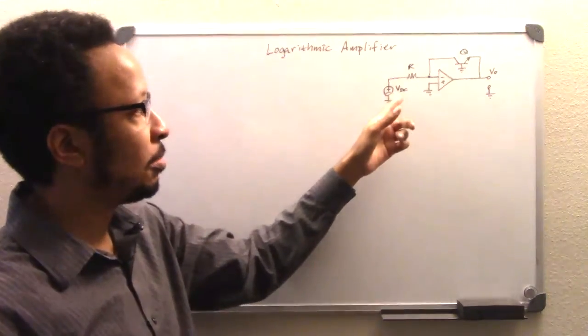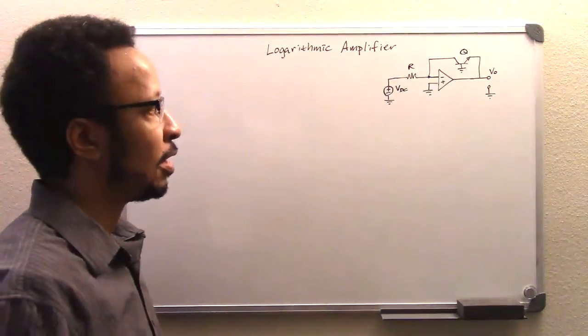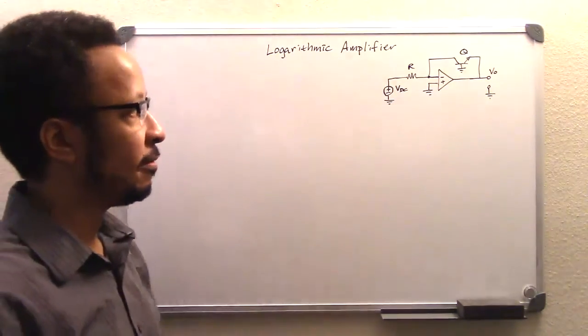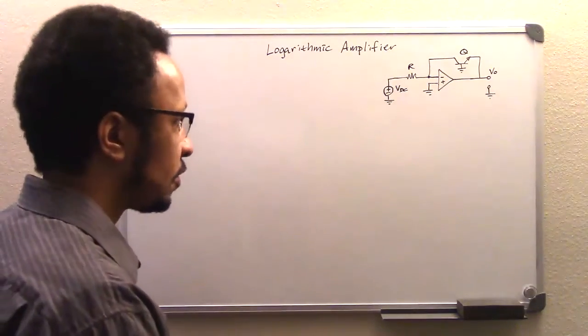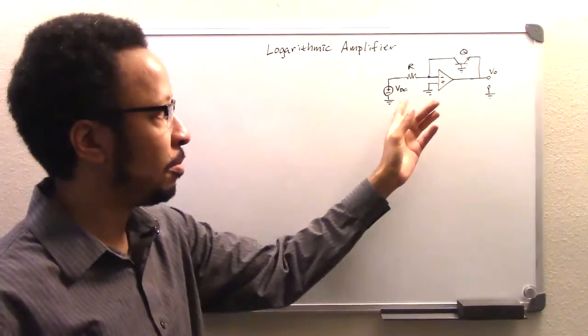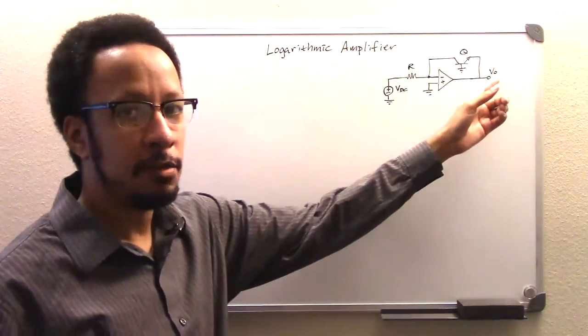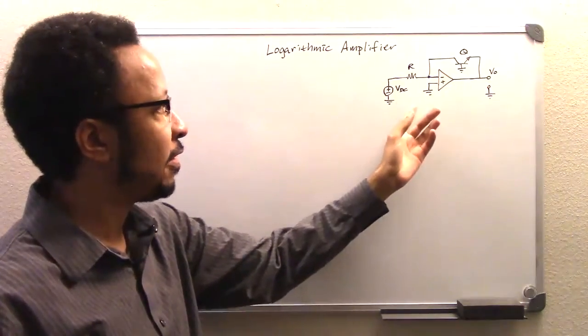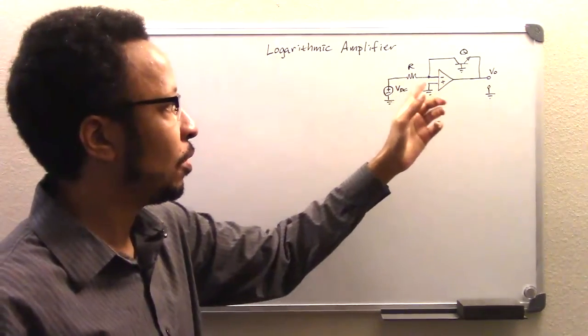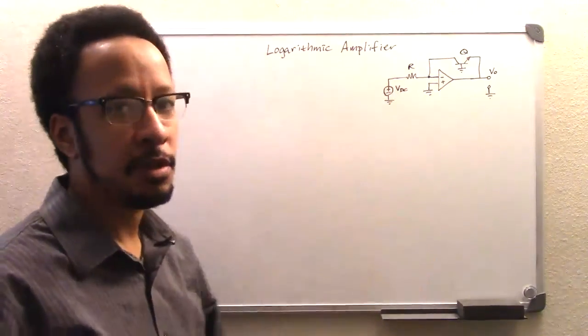And this will be our input, which is just the ordinary DC voltage that we'll just label as VDC. So what we'll see from this is the relationship between VDC and Vout. And we'll verify that in fact it'll be a logarithmic relationship from VDC to Vout.